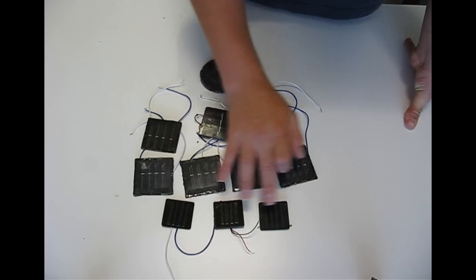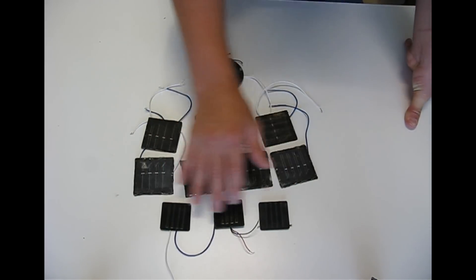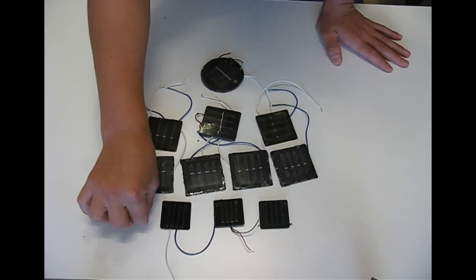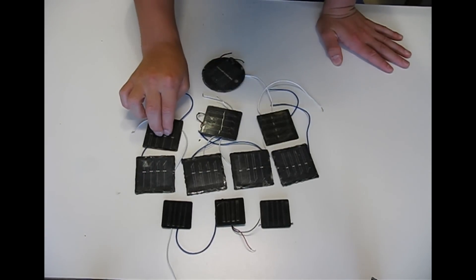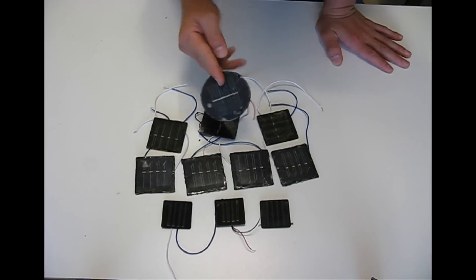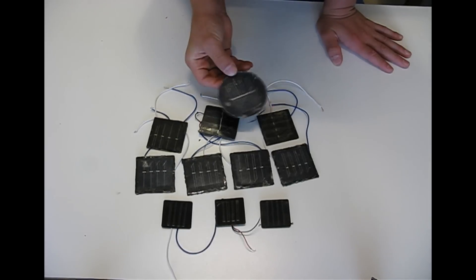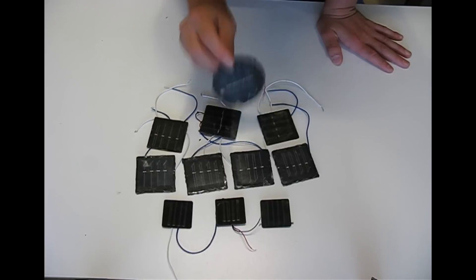This first row here, each of them produces about 25 milliamps, this row about 50 milliamps, this row about 35 milliamps, and this one back here is just a random one I got. This one produces about 40 milliamps.